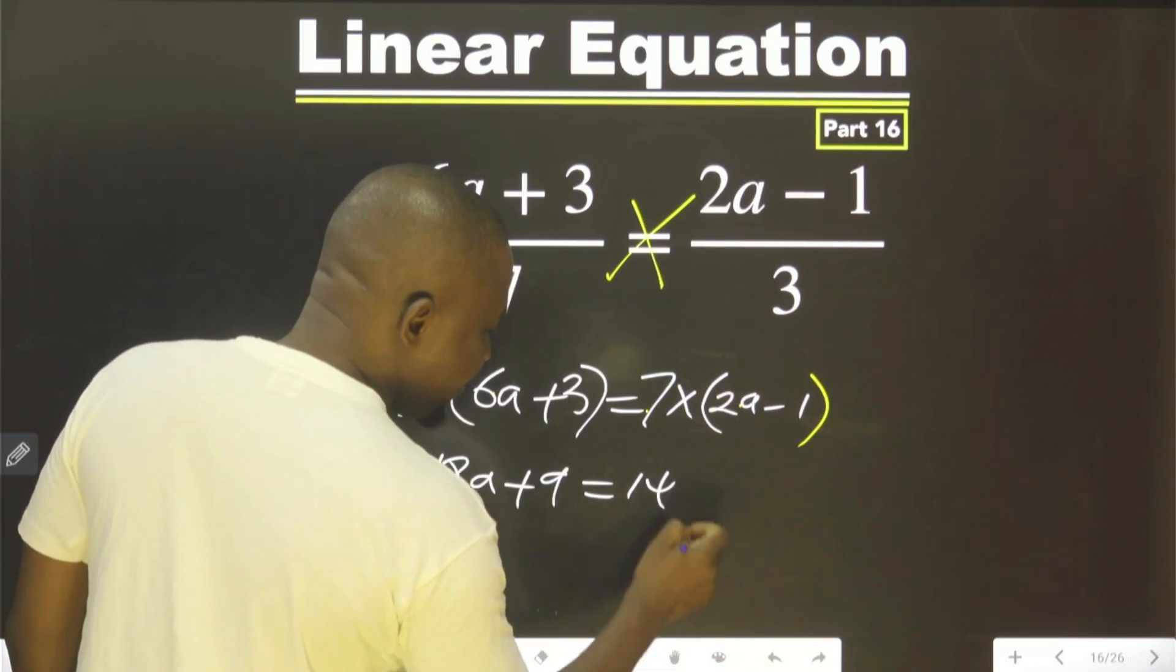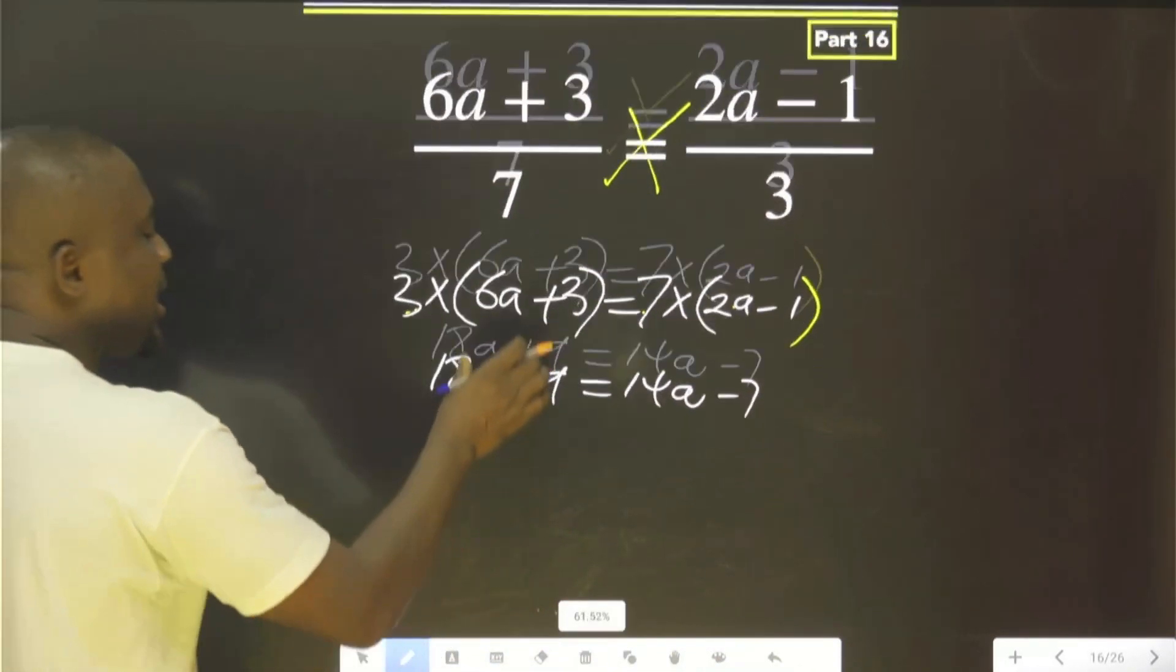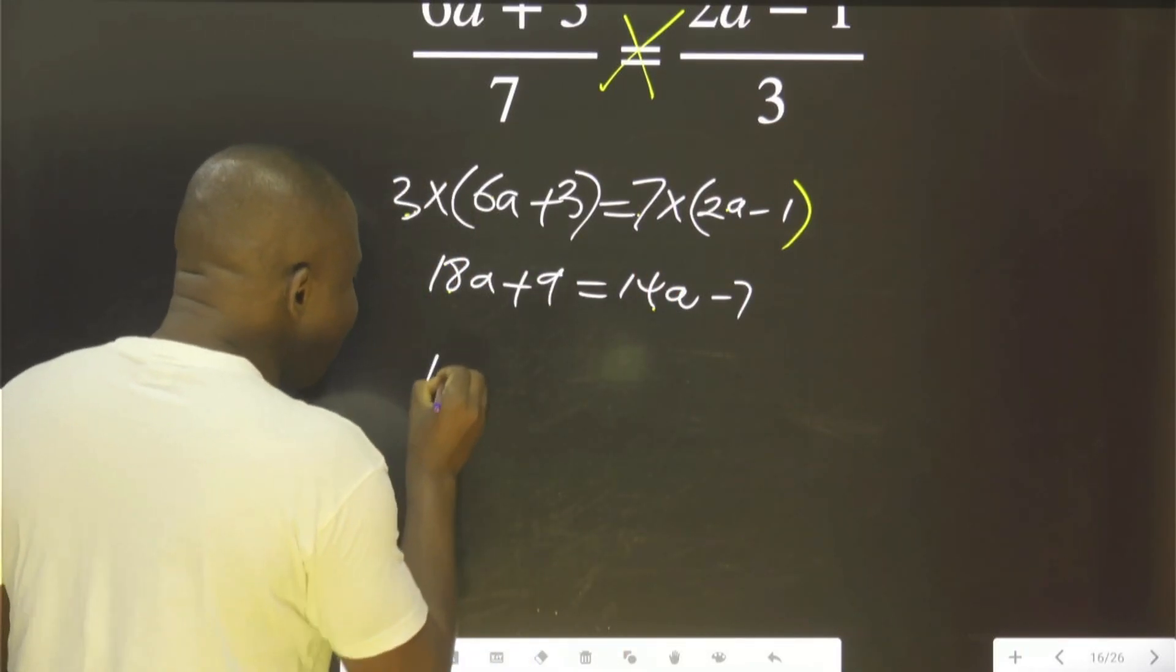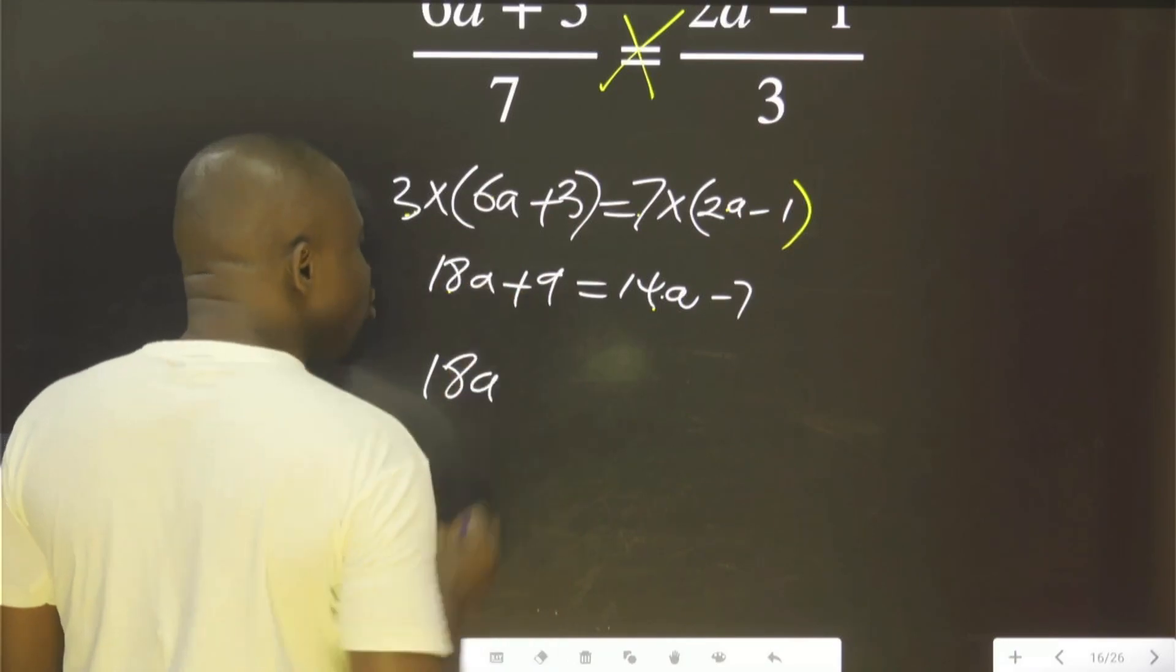Now, 14A, this is 7. Now the A terms should come together. So 14A will be here, you come and join 18A. While you are crossing here, you become minus 14A.